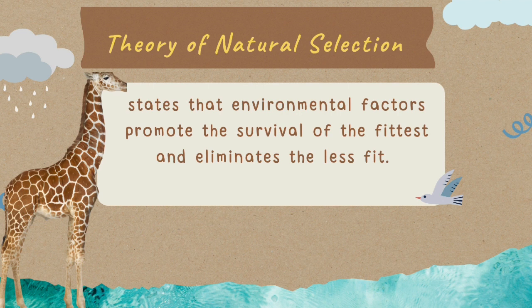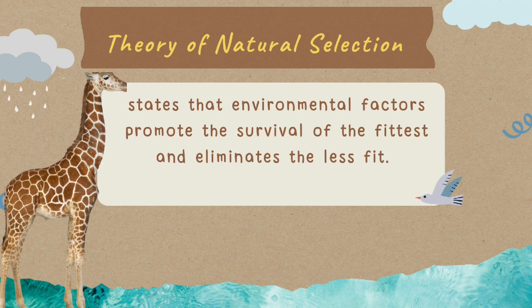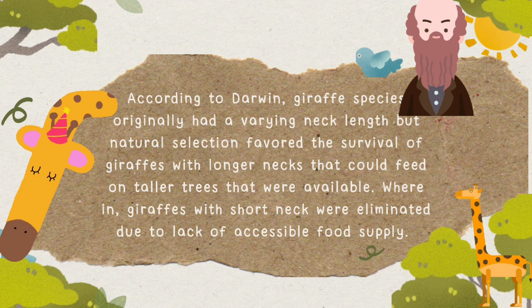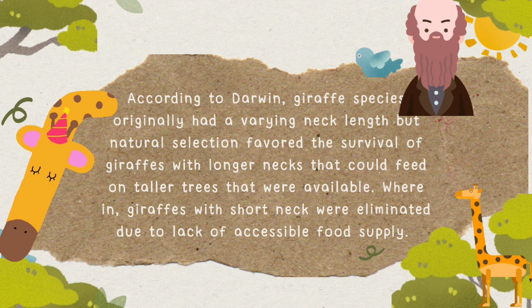The theory of natural selection states that environmental factors promote the survival of the fittest and eliminate the least fit. According to Darwin, giraffe species originally had varying neck lengths, but natural selection favored the survival of giraffes with longer necks that could feed on taller trees, while giraffes with short necks were eliminated due to lack of accessible food supply.